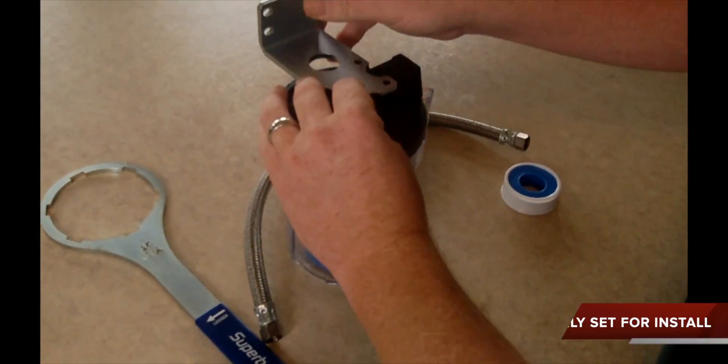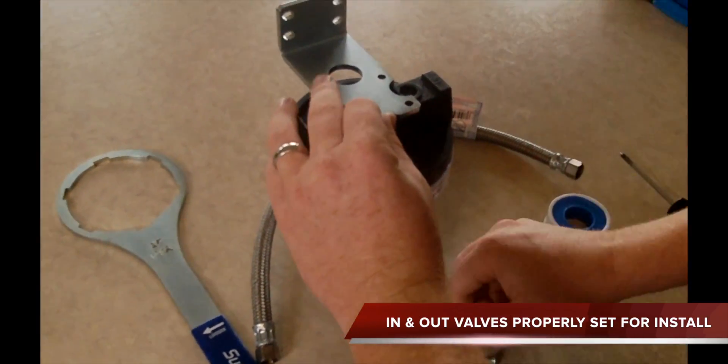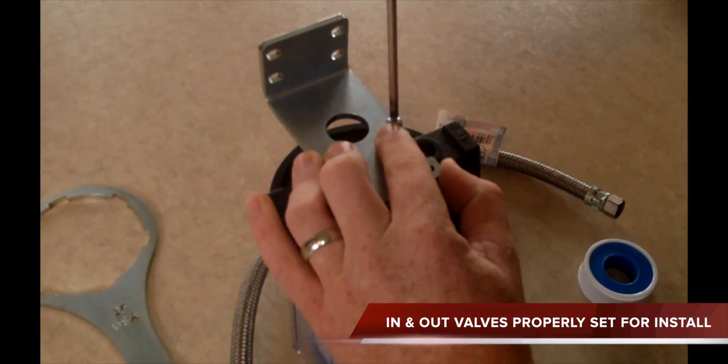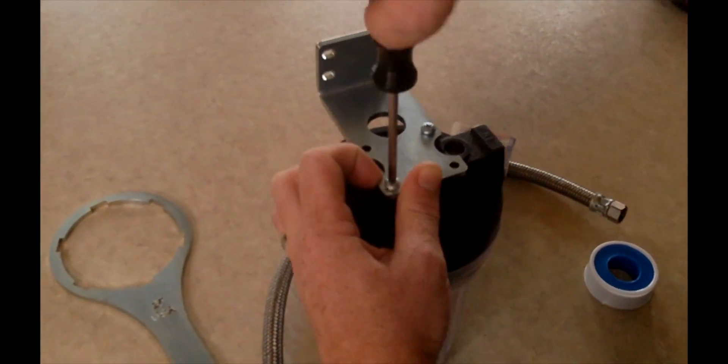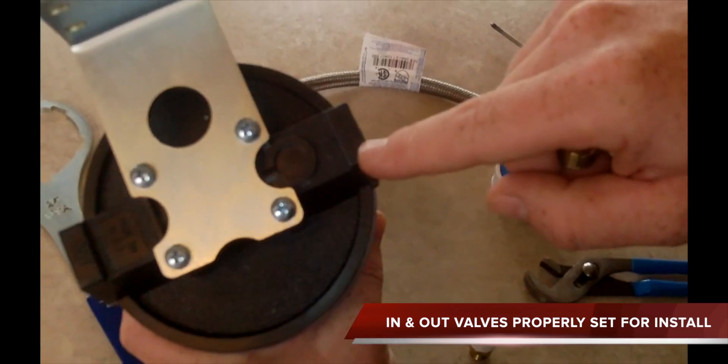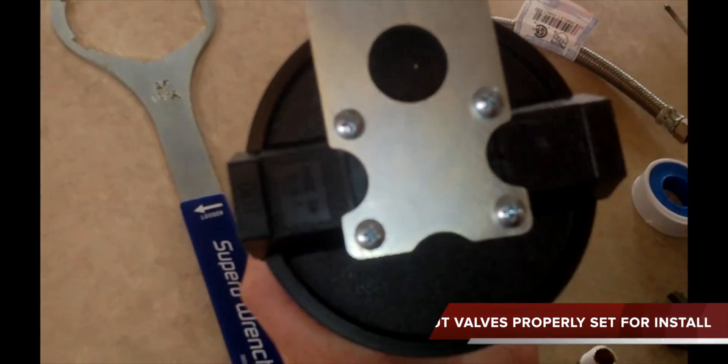Before attaching the mounting bracket to the head of the housing, make sure the in and out are properly set for your installation. As we see, the inlet and outlet are correct for our installation. Let's get started with step five.